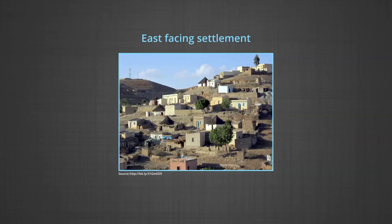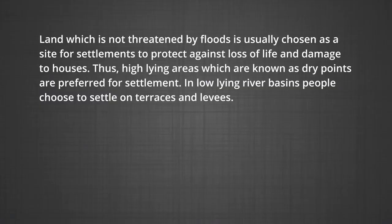As European countries are located in higher latitudes in temperate lands, the people of these countries needed to protect themselves from severe temperatures. So they mostly built their houses facing east to take advantage of sunshine, and care was taken to build their dwellings to prevent heavy winds, unhealthy mist, forest waves, and tides. Upland or dry land is also an important consideration — land not threatened by floods is usually chosen as a site for settlements to protect against loss of life and damage to houses. High-lying areas known as dry points are preferred.